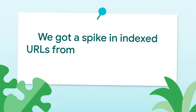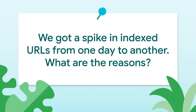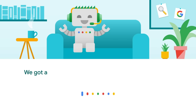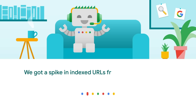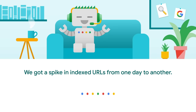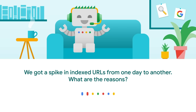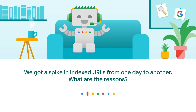Lorenzo is asking: we got a spike in indexed URLs from one day to another. What are the reasons? Well, maybe we got more hard drives, maybe we freed up some space, maybe we just discovered those new URLs. It's hard to tell. Celebrate nonetheless.